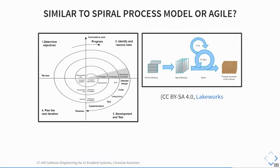This raises an interesting question: isn't it somewhat similar to the spiral process model or Agile? In the spiral model we focus on risk — you iterate, build prototypes, extend them, and do the riskiest parts first as a risk management technique. Agile is about not doing too many specifications up front, working with the customer, iterating frequently, demonstrating something, and working in sprints. Is that the same or different from the iterative workflow in data science?